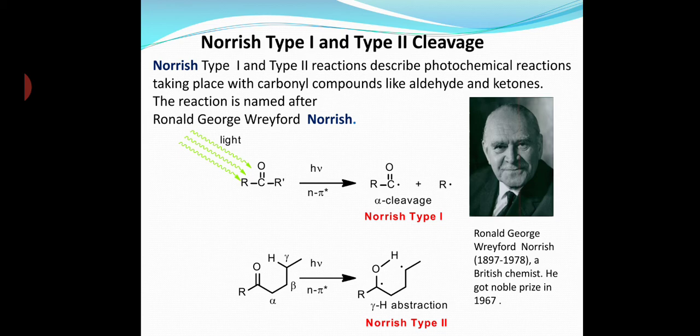If the molecule has a gamma hydrogen with respect to the carbonyl group, it can undergo another type of reaction. Light falls on the carbonyl functional group, it gets excited and abstracts a gamma proton through a 6-membered transition state. This reaction is called Norrish Type 2 reaction.